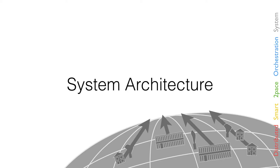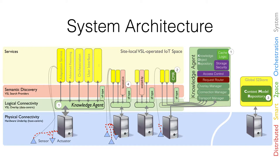Here is a system architecture overview showing the components and their purpose. At the bottom we have the physical hardware, especially compute nodes where services can run and where sensor and actuator hardware is connected. On this hardware we have our middleware components, the so-called knowledge agents.